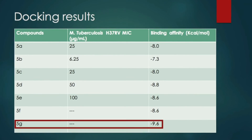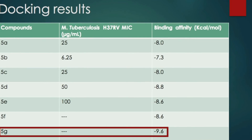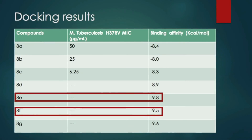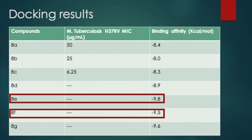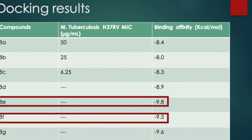Accordingly, from the 2-methyl series, compound 5G exhibited the highest binding affinity against this enzyme. Moreover, the 2-phenyl series was found to be more active than the 2-methyl series of quinazolinone compounds. In particular, compound 8G showed the highest binding affinity.